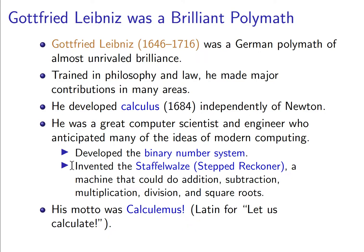Leibniz is like Leonardo da Vinci. He was trained in philosophy and law, but he made major contributions in many areas. You probably know that he developed calculus independently of Newton, and this caused a huge intellectual war between the British and the Germans about who should have priority. Today we assume both developed calculus independently. Leibniz's notation was much more successful — we still use it today, notation like dx over dy or the integral sign.